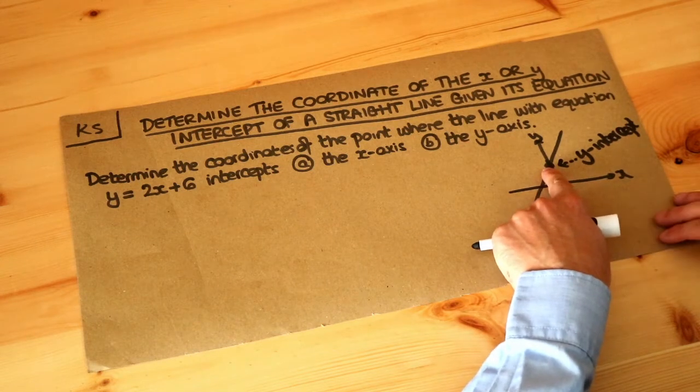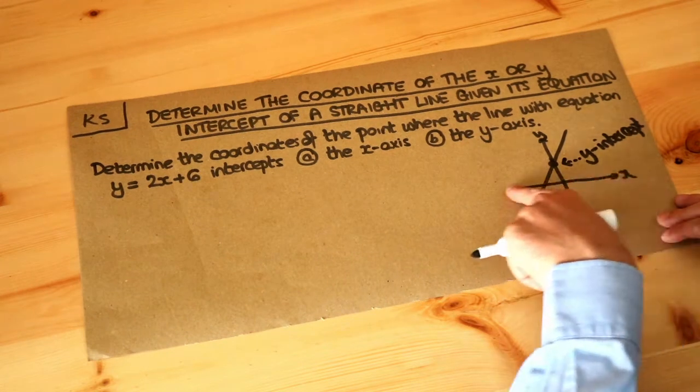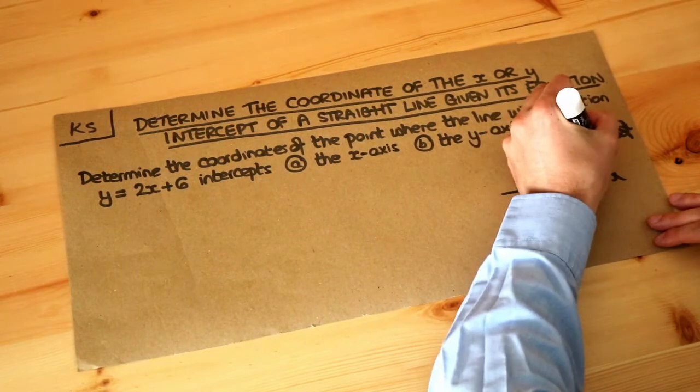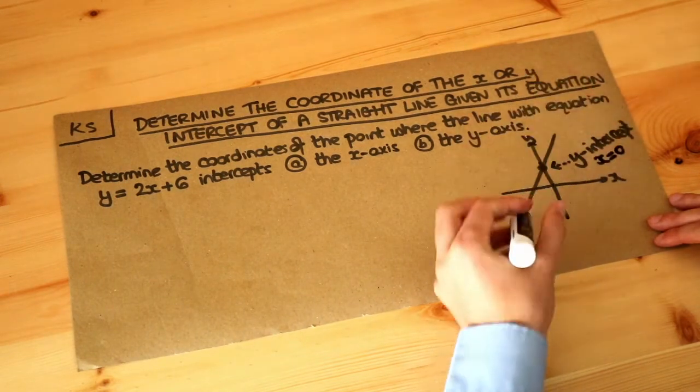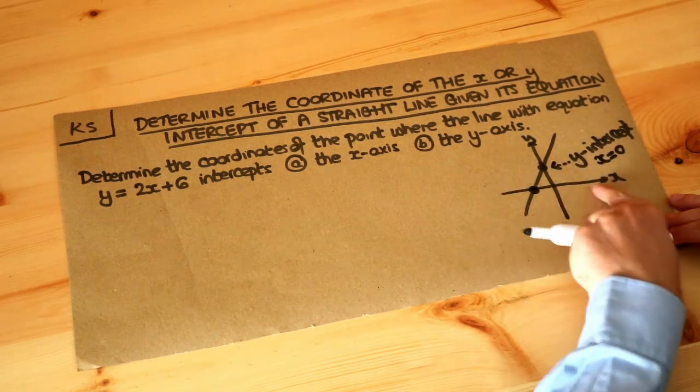Well we don't know what the y coordinate is but can we see that the x value here is zero. Across the x axis here the x value is zero. So when you want the y intercept, x is zero. And this point here is where this line cuts the x axis.